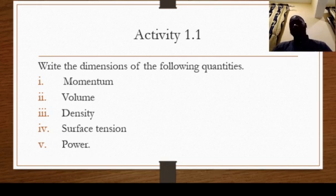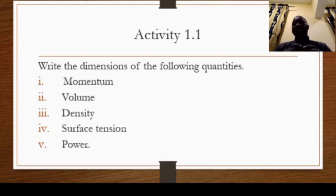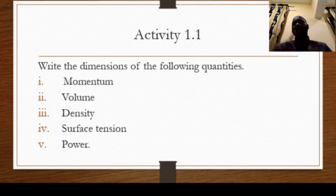We have been able to look at different dimensions as a way of representing quantities in terms of their fundamentals, and we have seen how to write the dimensions of quantities. The dimensions of quantities are based on three basic quantities: mass [M] in square brackets, distance [L] in square brackets, and time [T] in square brackets. With these three, we can write all other quantities.